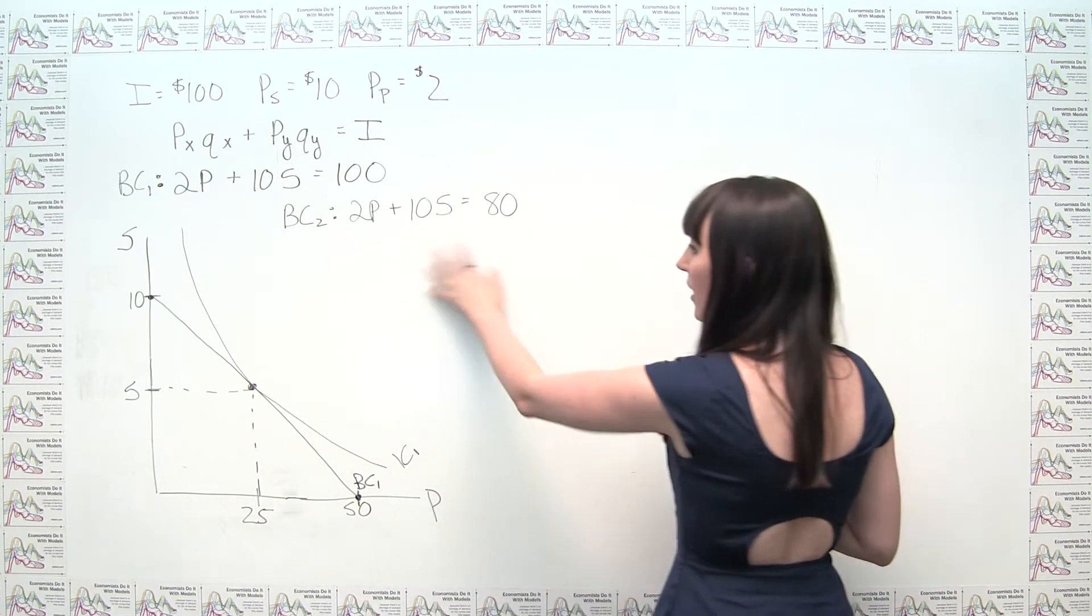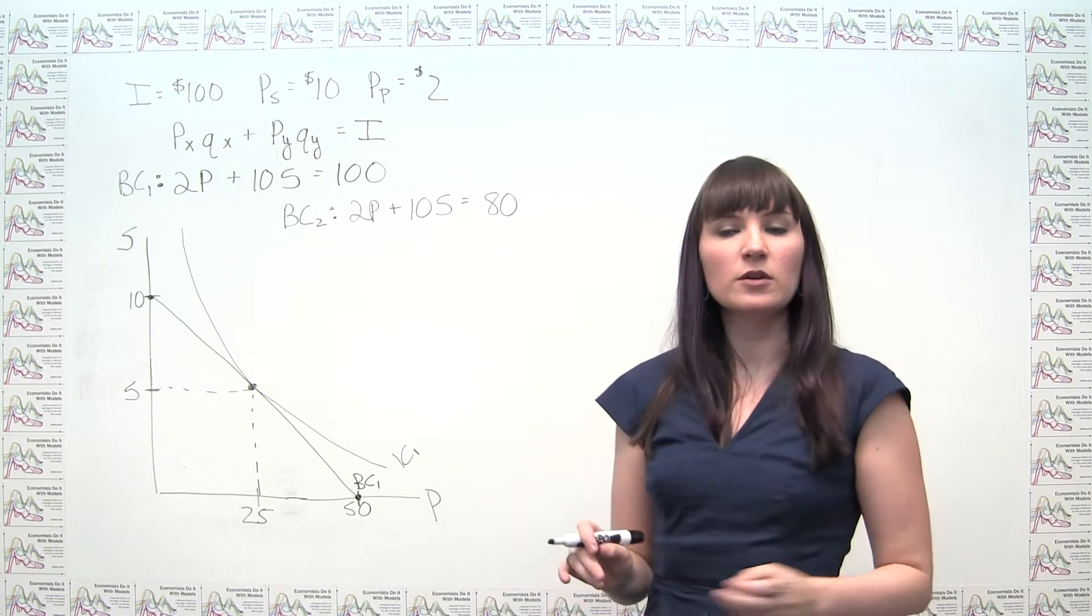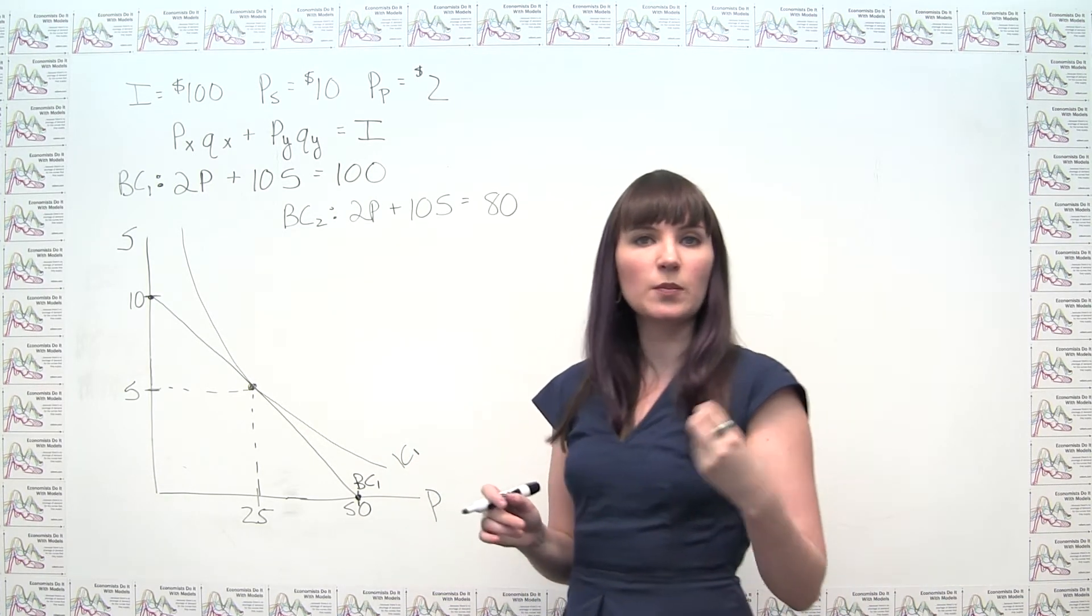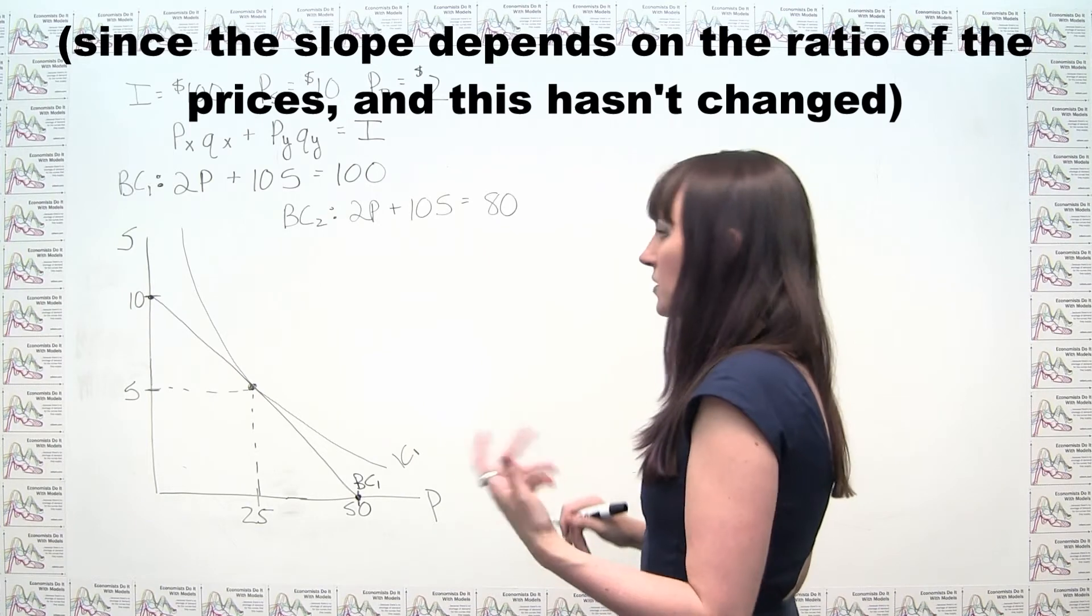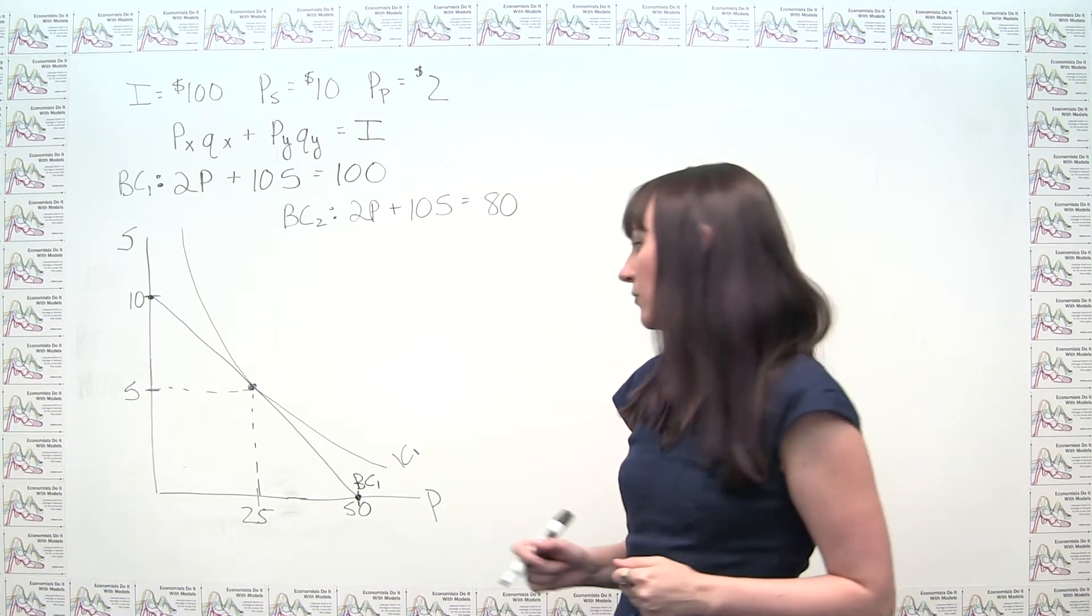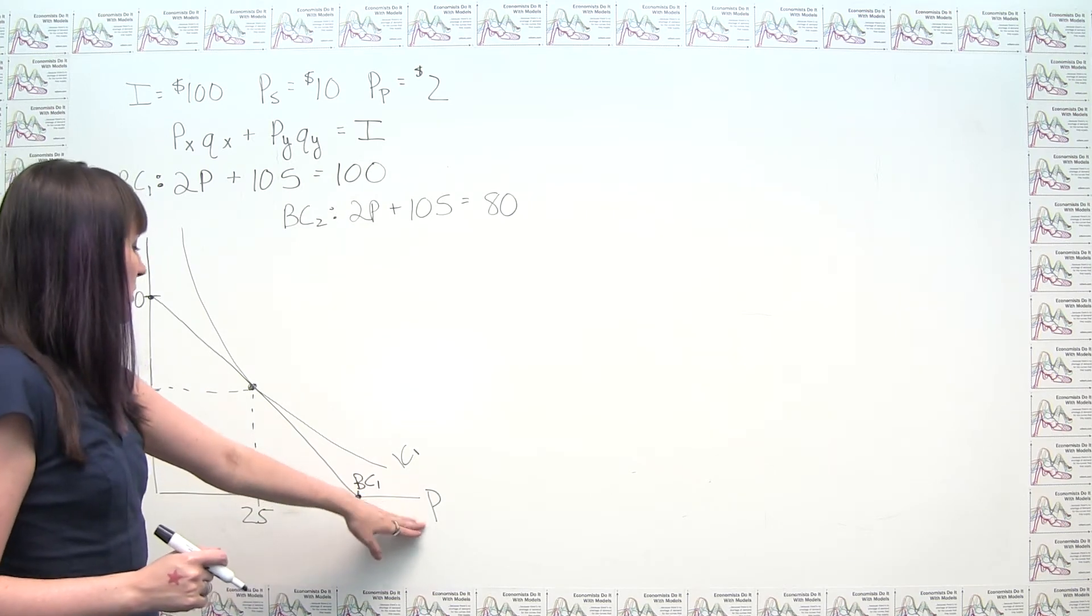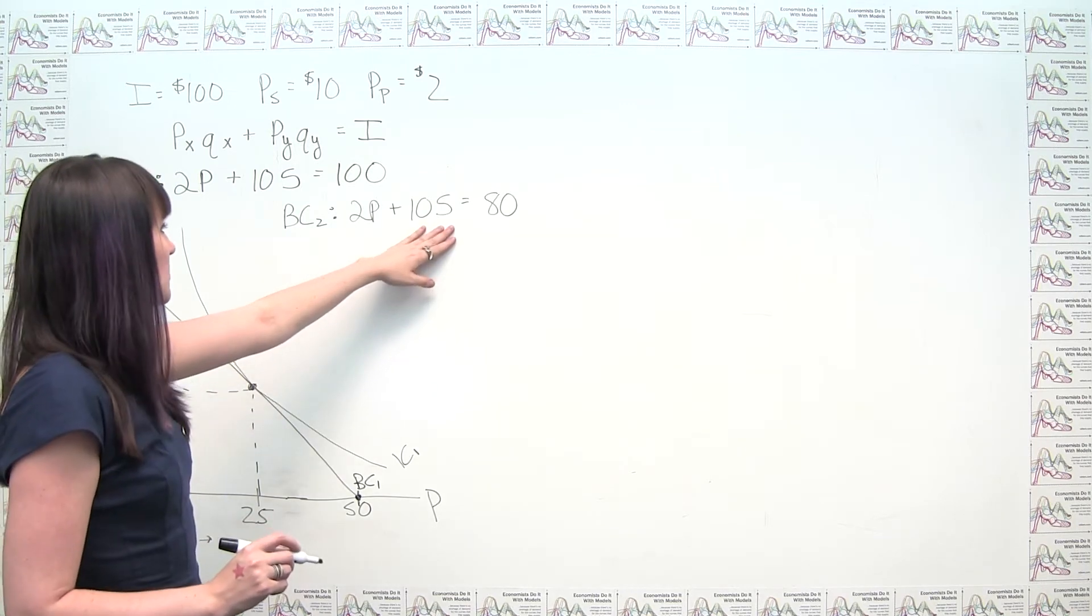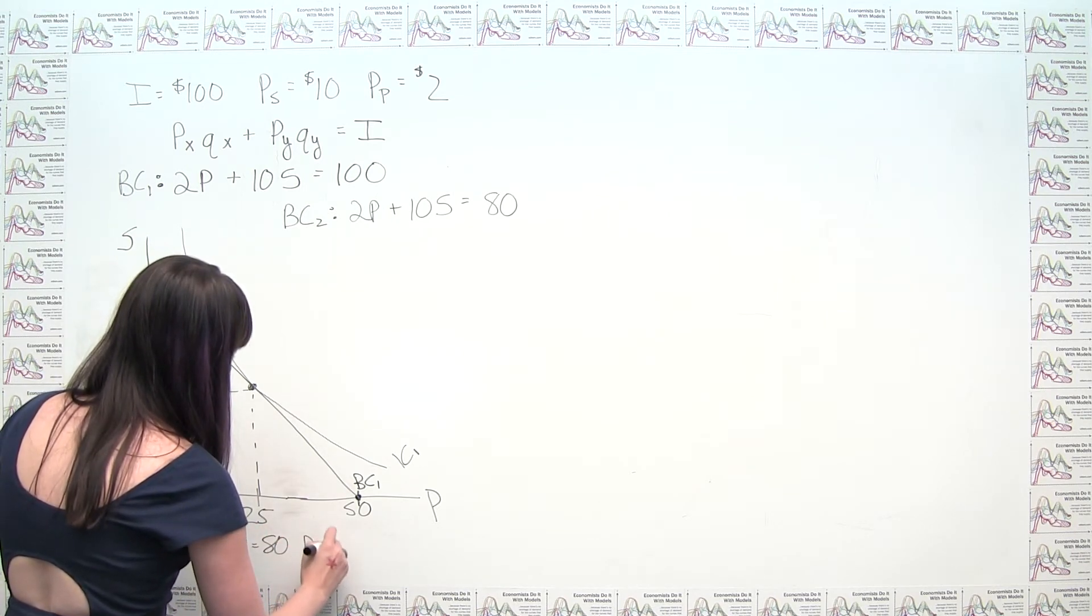So we can think about how to graph this, and we'll notice that it actually has the same slope as the original budget constraint, which is not surprising, because we did learn that shifts in income just result in a parallel shift of the budget line or budget constraint. But again, let's use our tried and true method to see where our budget constraint hits our axes. Down here, we have the point on our p-axis where s is equal to 0. So if s is 0, this drops out, we get 2p equals 80, or p equals 40.